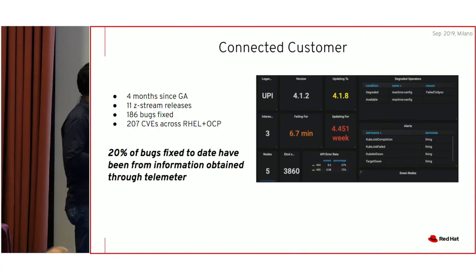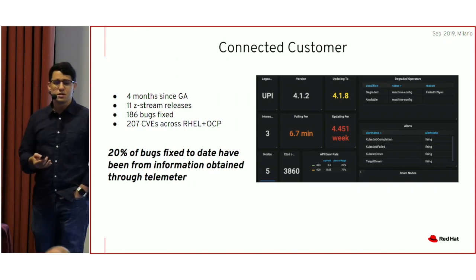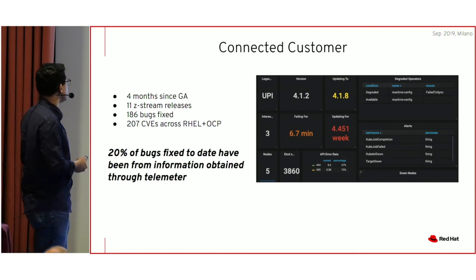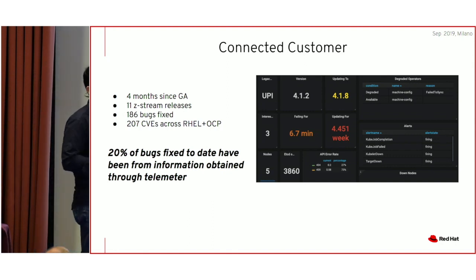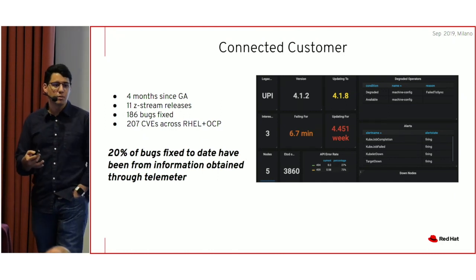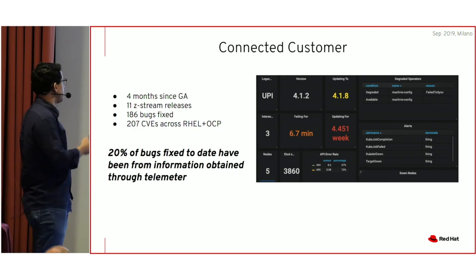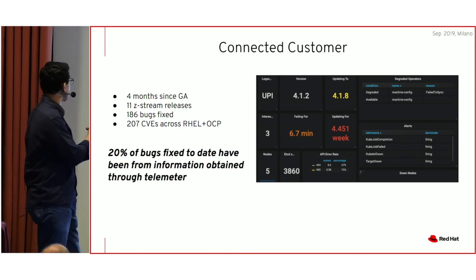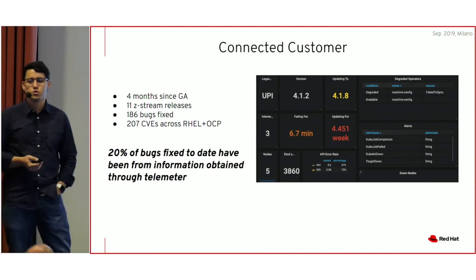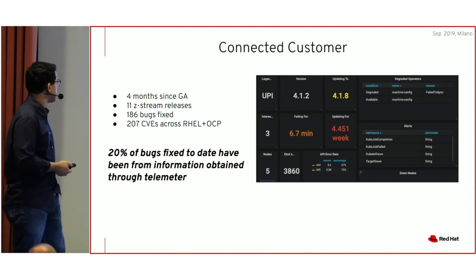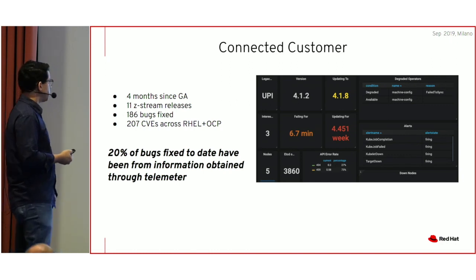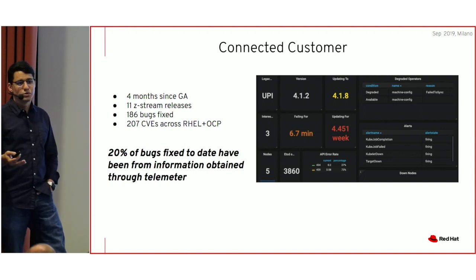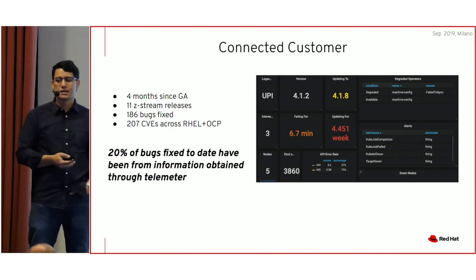Brian already mentioned this — one of the things you get with every OpenShift 4 cluster is telemetry. It's optional and you can disable it. But by enabling it, you allow this back-end system at Red Hat to read anonymized metadata about your cluster. With this data, we can see the overall health of your cluster, let you know when a new CVE came up and your cluster needs to be patched, and we found that for about 20% of bugs, we were able to detect those and notify customers without ever talking directly to them — based purely on telemetry data.